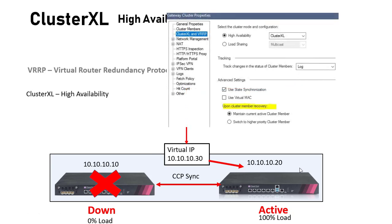What happens to the device that became active during a failover? If that device comes back to life, we can specify behavior in our policy: either 'maintain current active cluster member' — it stays active and the recovered device becomes standby until another failover occurs — or 'switch to higher priority cluster member,' in which case they switch back to the original roles, with the recovered device becoming active and the other becoming standby.